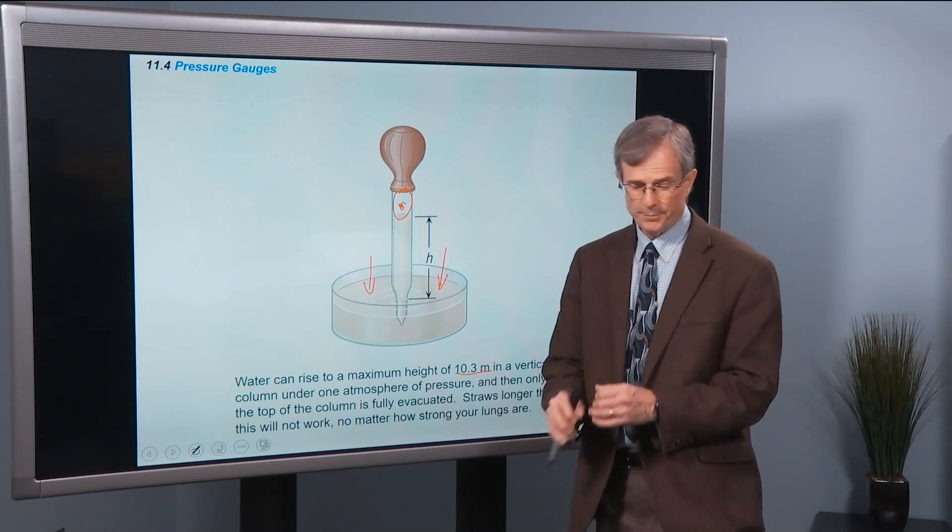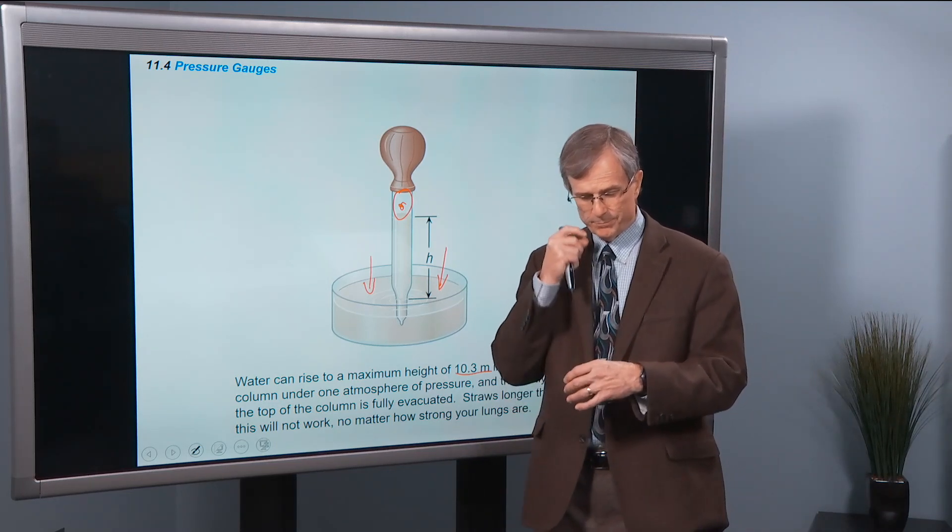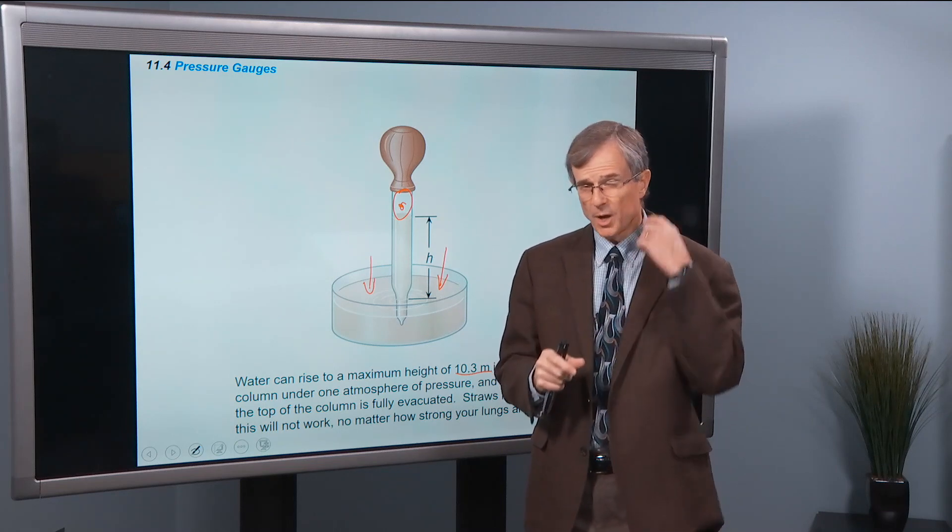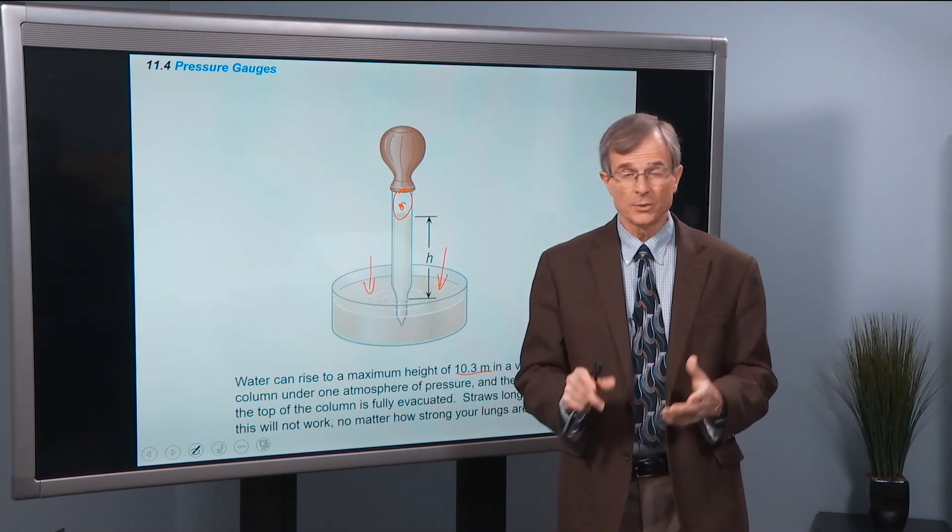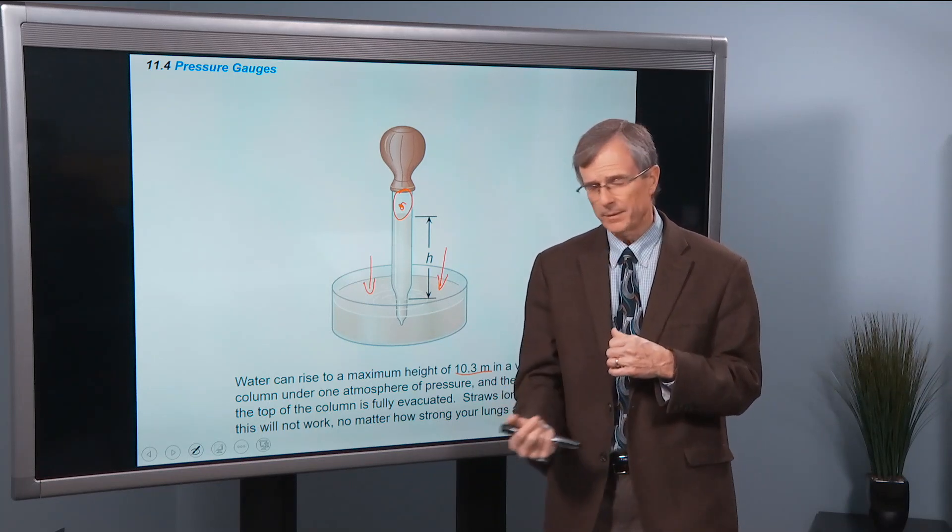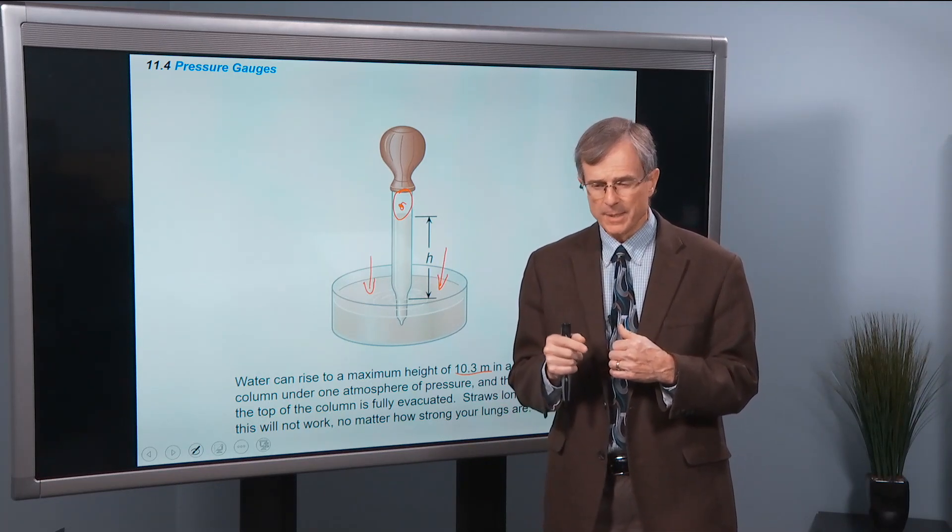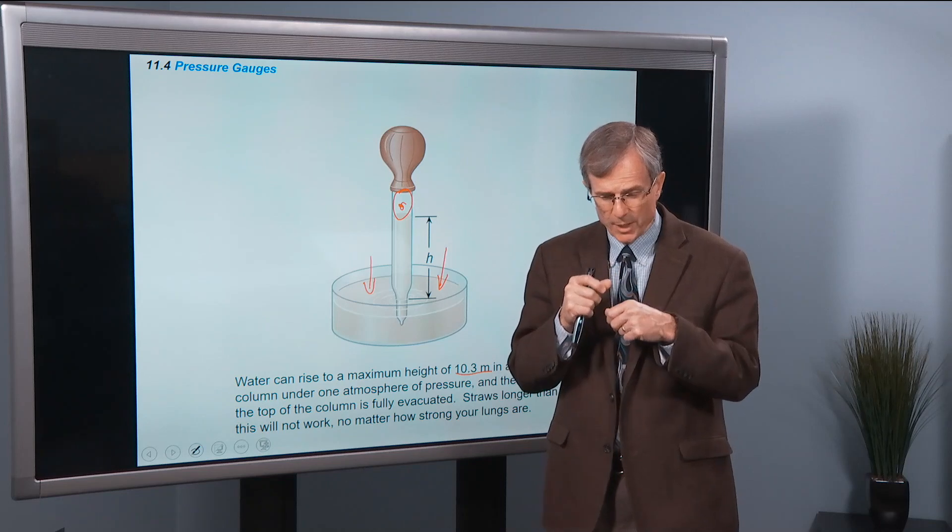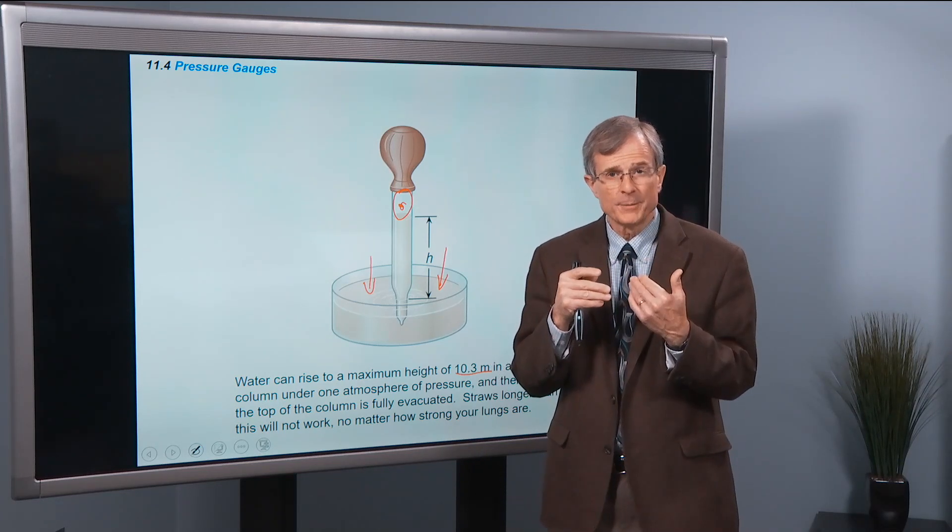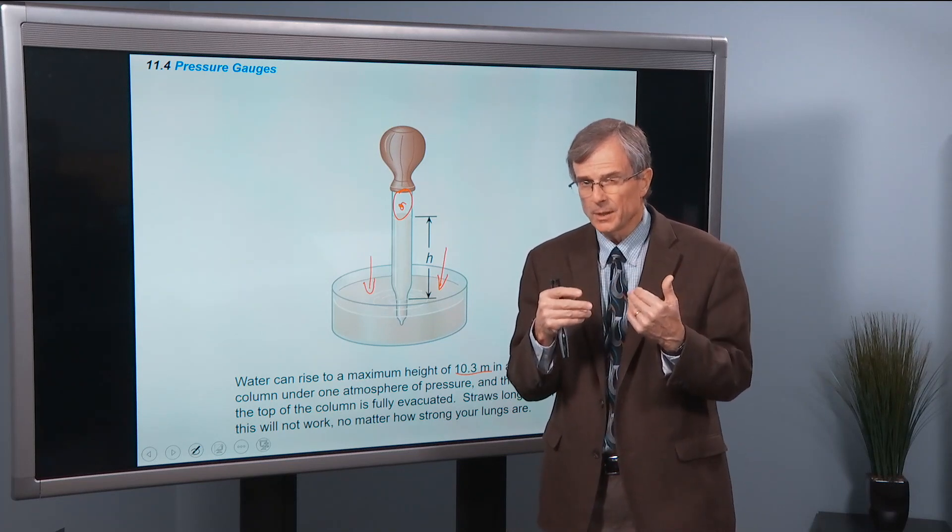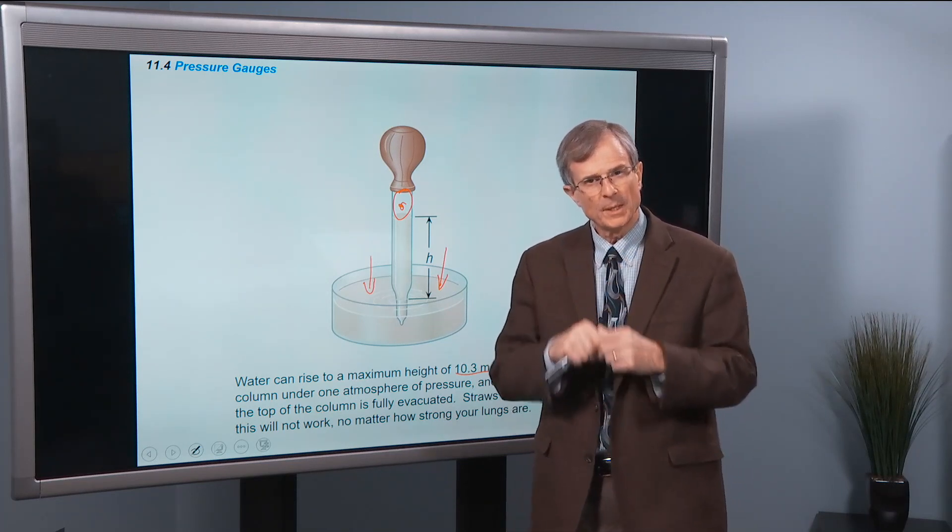So if you want to try and suck your soda through a straw that's longer than 10.3 meters, no matter how strong your lungs are, you're not going to be able to pull that liquid through the straw, because you can evacuate with your lungs, if you're really strong lungs, you evacuate all the air from the top of that straw, and it's still not enough to get the liquid up into your mouth.